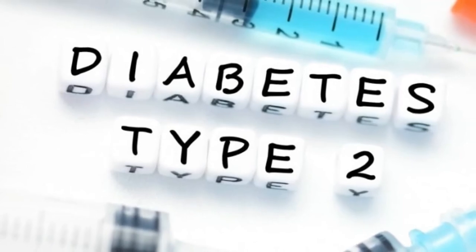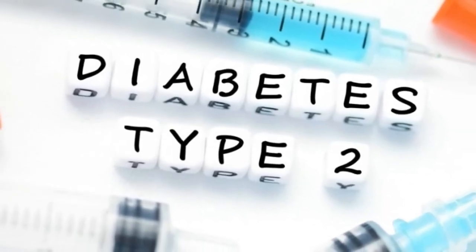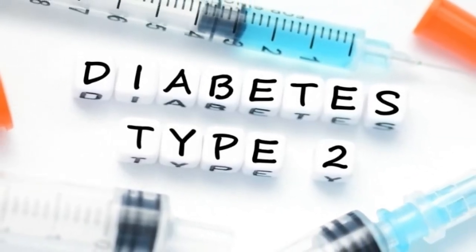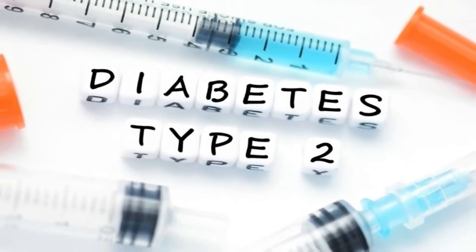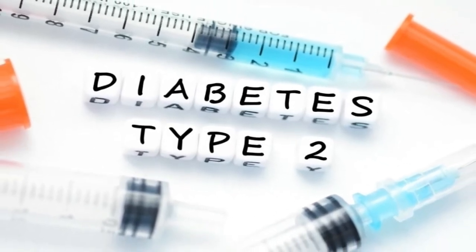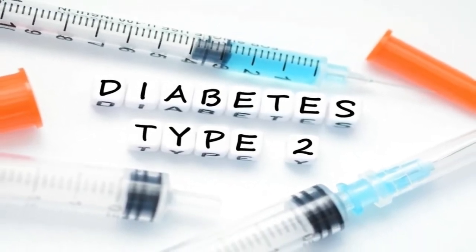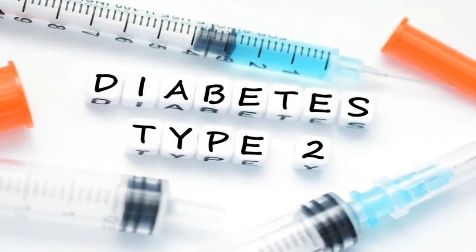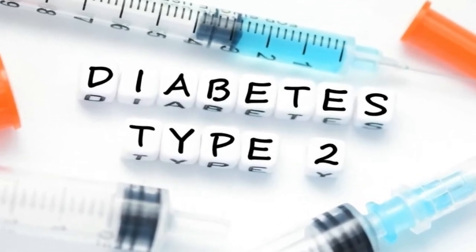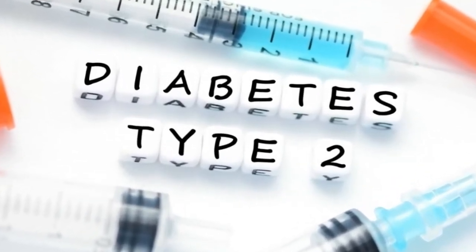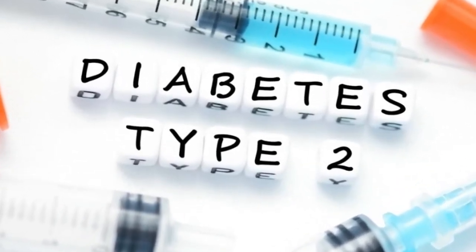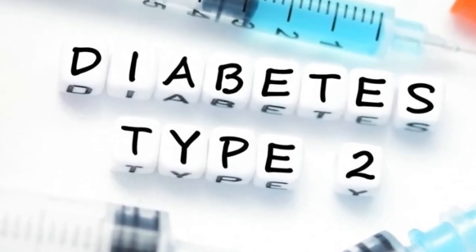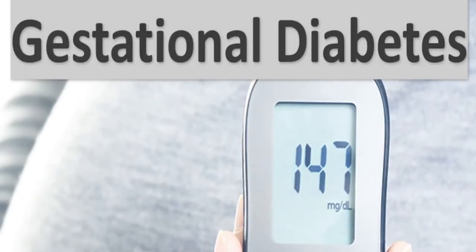Type 2 diabetes happens when the body can't make enough insulin, or the body can't use what it makes correctly. Type 2 may be controlled with diet, exercise, and weight loss. It can also be controlled with medicine taken by mouth, or with insulin injections. About 9 in 10 to 19 in 20 people with diabetes have type 2.